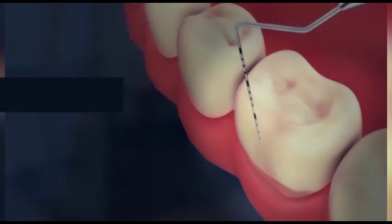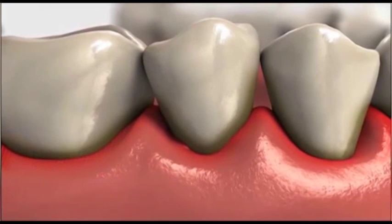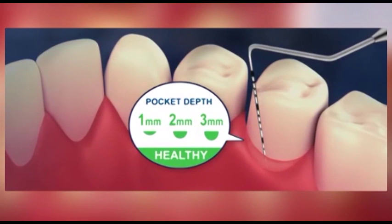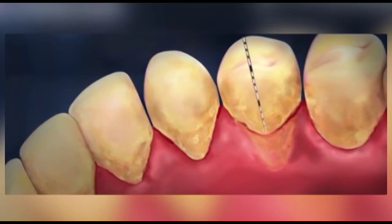Periodontitis is the second stage. Gums begin to move away from the teeth, allowing plaque and bacteria to move closer to tooth roots, supporting fibers and bones, with pocket depth of 5 to 7 millimeters.